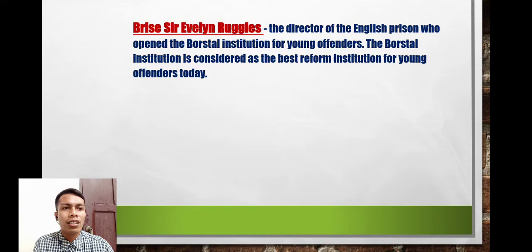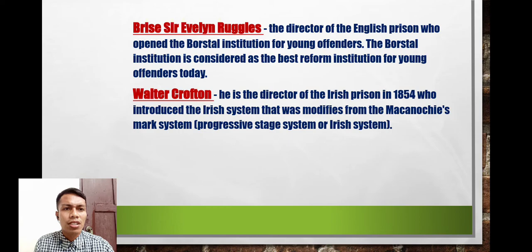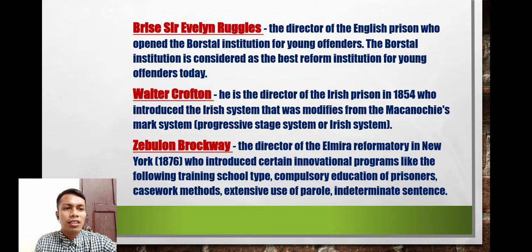Sir Walter Crofton was the director of Irish prisons in 1854, who introduced the Irish system, modified from Maconochie's mark system, also known as the progressive stage system. Zebulon Brockway was director of the reformatory in New York in 1876, who introduced innovations in correctional programs including training schools, compulsory education for prisoners, casework methods, extensive use of parole, and the indeterminate sentence.